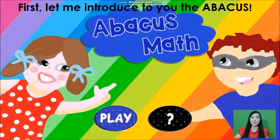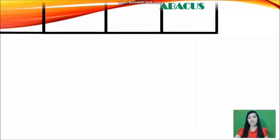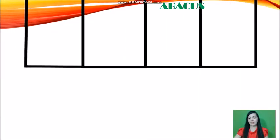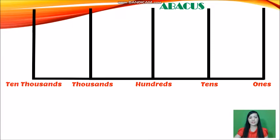Now let me introduce to you the abacus. This is the representation of the abacus. You have the place values of 1s, 10s, 100s, 1,000s, and 10,000s.